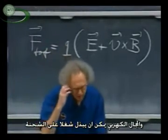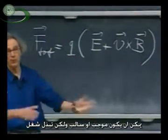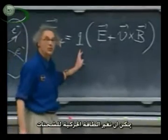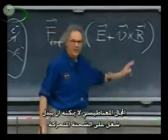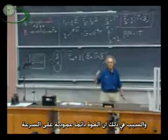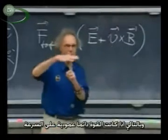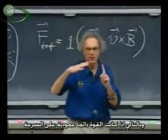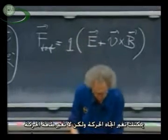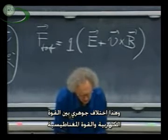An electric field can do work on a charge. Q delta V can be positive or negative, but it can do work — it can change the kinetic energy of the charge. Magnetic fields can never do work on a moving charge, because the force is always perpendicular to the velocity V. If the force is always perpendicular to the motion, you can change the direction of the motion, but you can't change the kinetic energy. That's a fundamental difference between the electric force and the magnetic force.